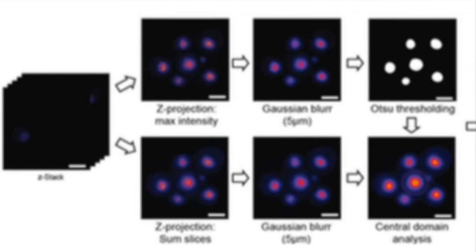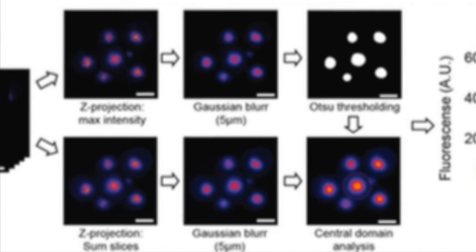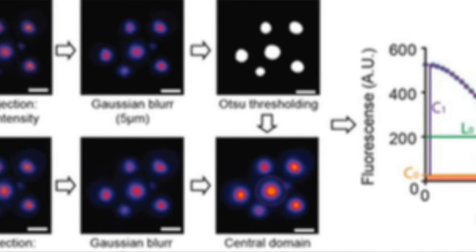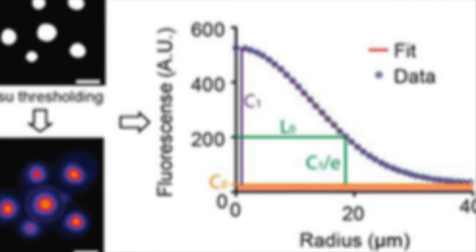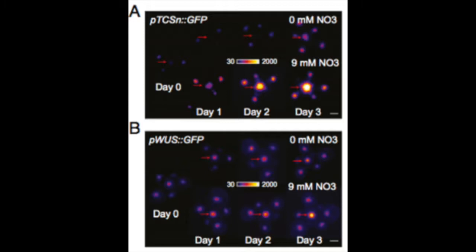Can you take us through some of the experimental techniques you used? A lot of what we do is based on confocal microscopy. We image inflorescence meristems that are expressing different markers, like stem cell markers related to stem cell regulation, like promoter fusions for wuschel or cytokinin response. We then try to correlate the signal we see by confocal to the different treatments we apply to the plant, like different levels of nitrate.